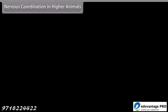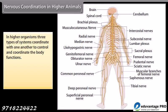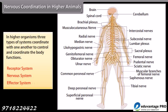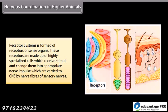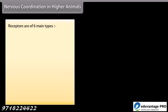In higher organisms, three types of systems coordinate with one another to control and coordinate the body functions: receptor systems, nervous system, and effector system. Receptor systems are formed of receptors or sense organs, made up of highly specialized cells which receive stimuli and change them into appropriate nerve impulses, carried to the CNS by nerve fibers of sensory nerves. Receptors are of six main types.